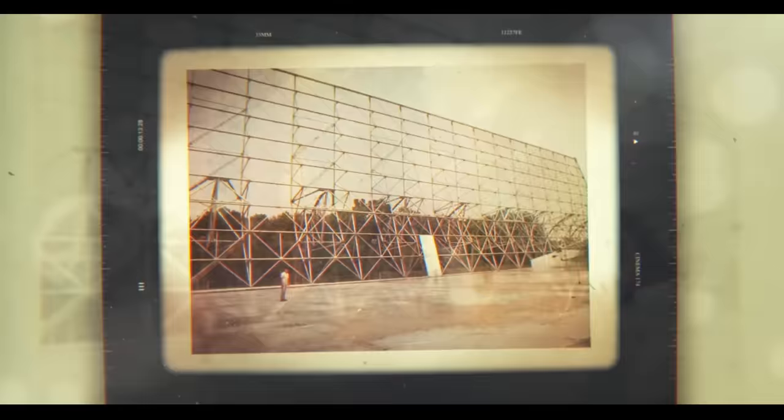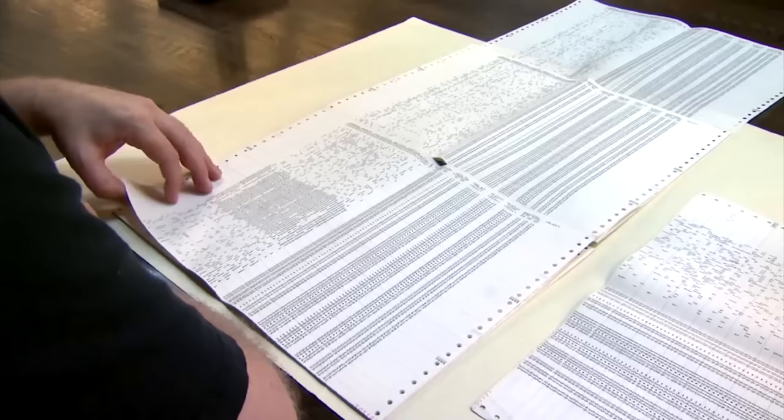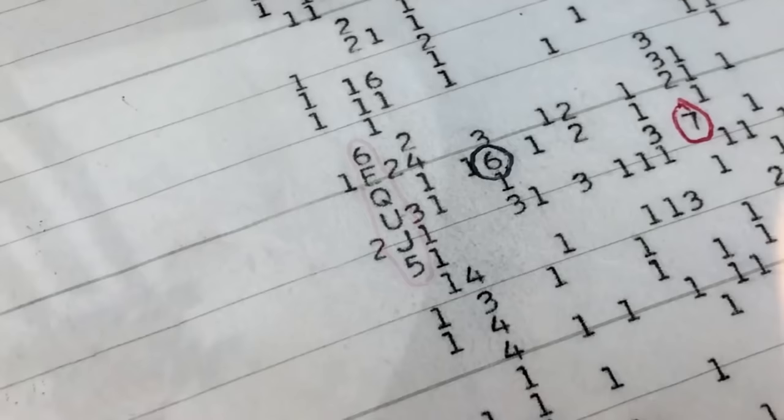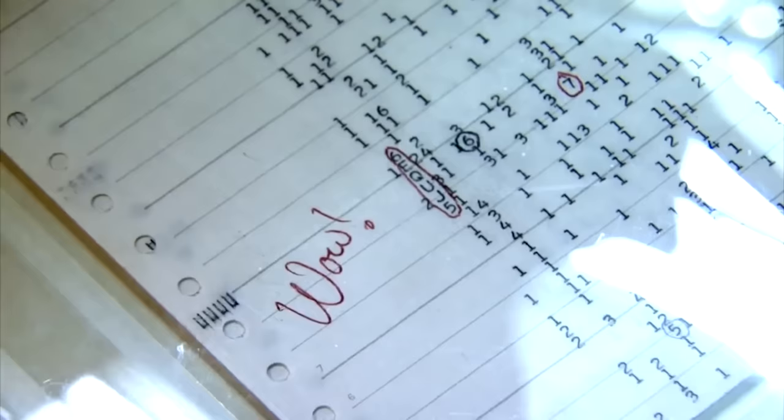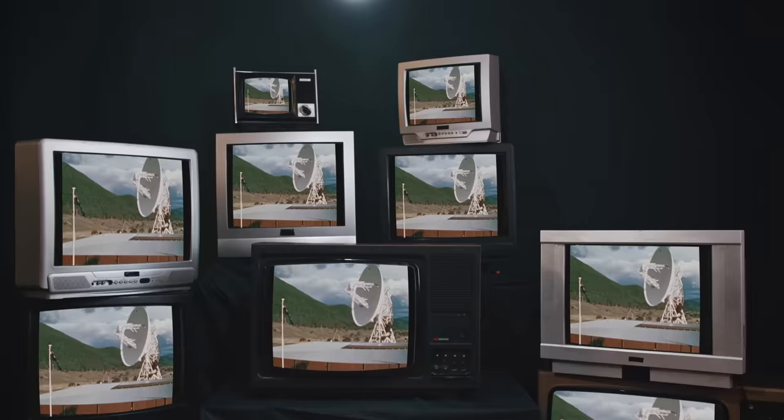The WOW signal was a mysterious and unexplained radio signal detected from outer space on August 15, 1977. It is one of the most famous and puzzling radio signals ever received by SETI. The signal was detected by the Big Ear radio telescope at Ohio State University's Perkins Observatory, which was used for SETI research at the time.